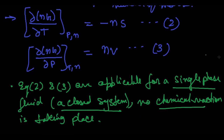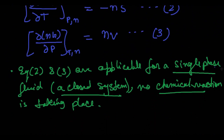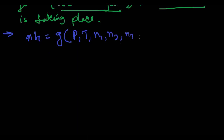For a more general case of a single-phase open system, material may pass into and out of the system, and nG becomes a function of the number of moles of the chemical species present. It is still a function of T and P. We rationalize the functional relation as: nG = G(P, T, N₁, N₂, N₃, ..., Nᵢ).